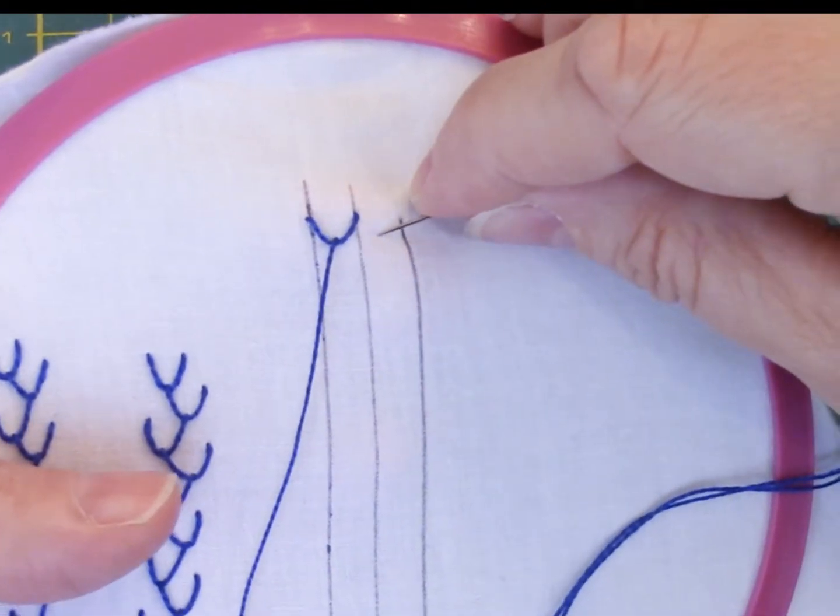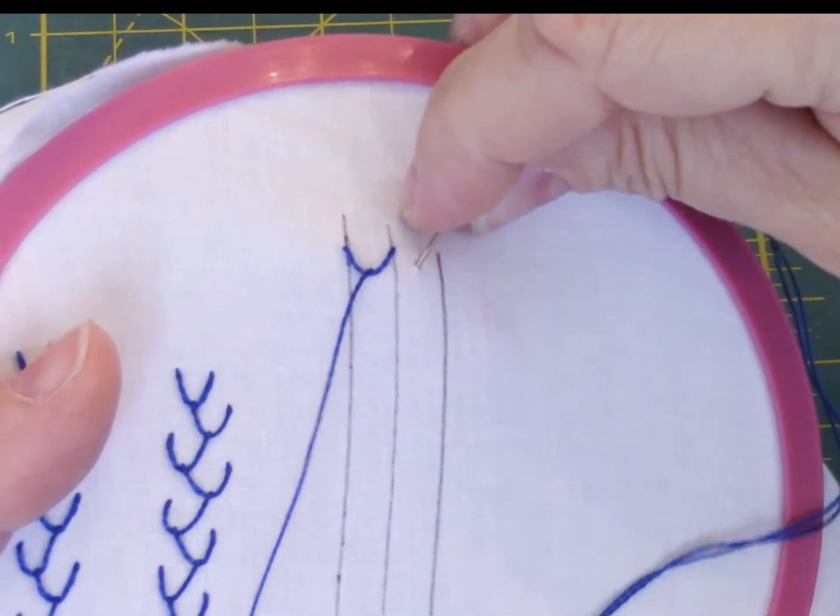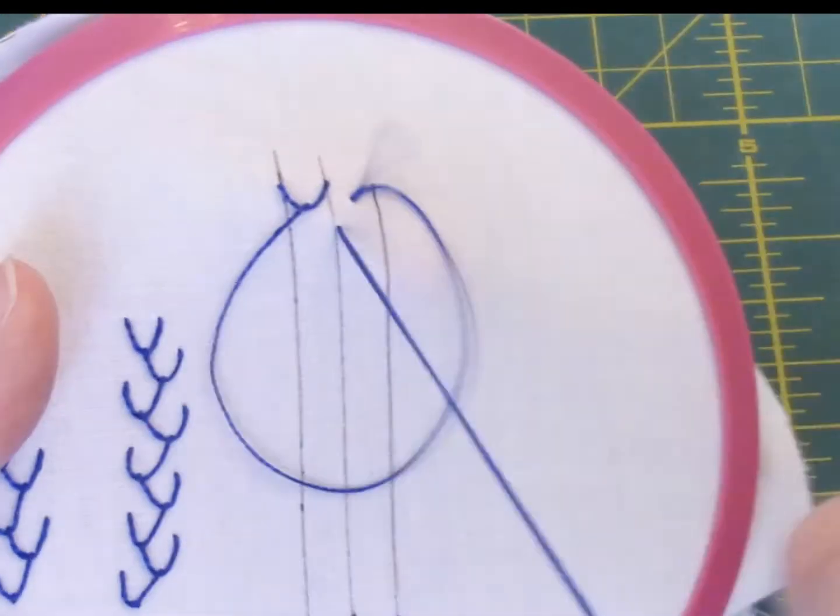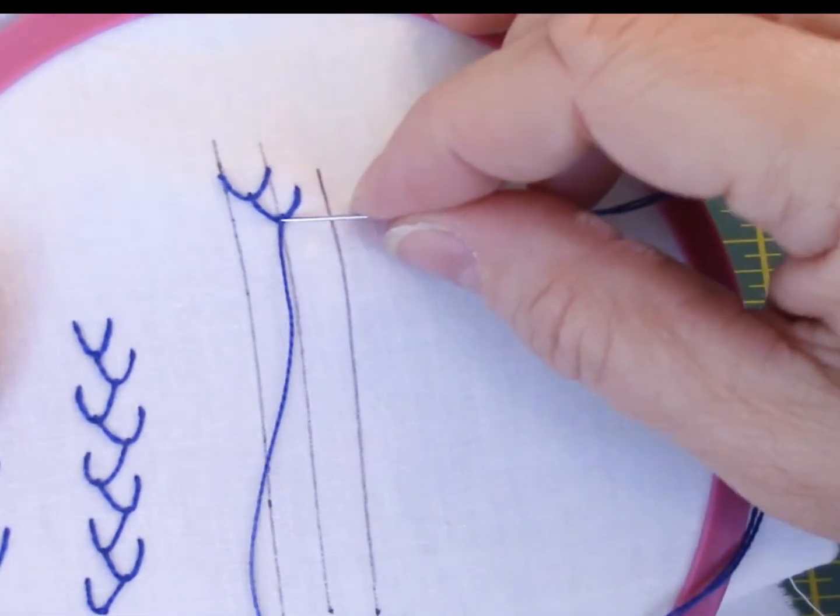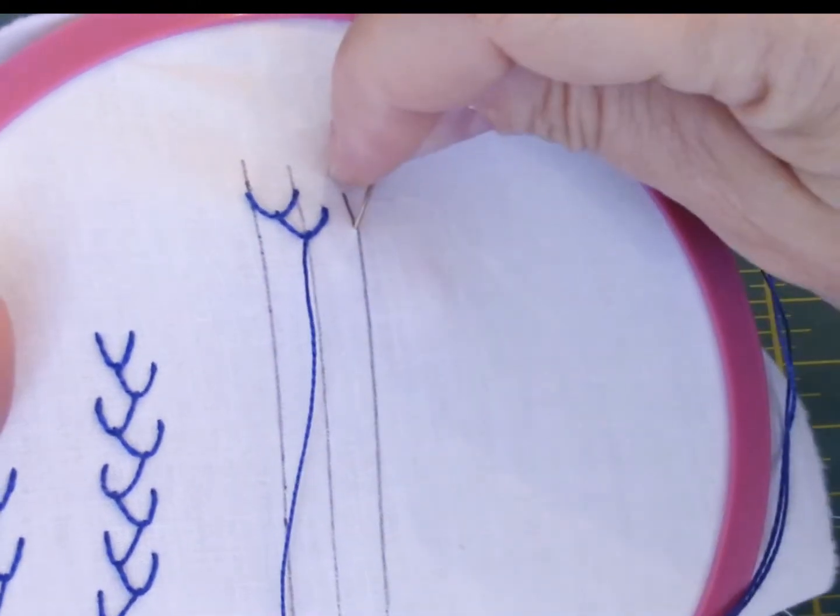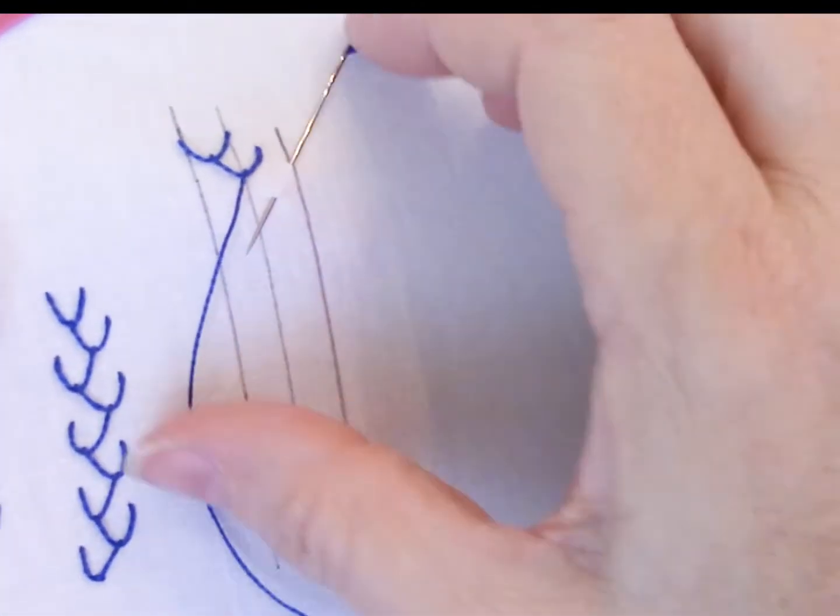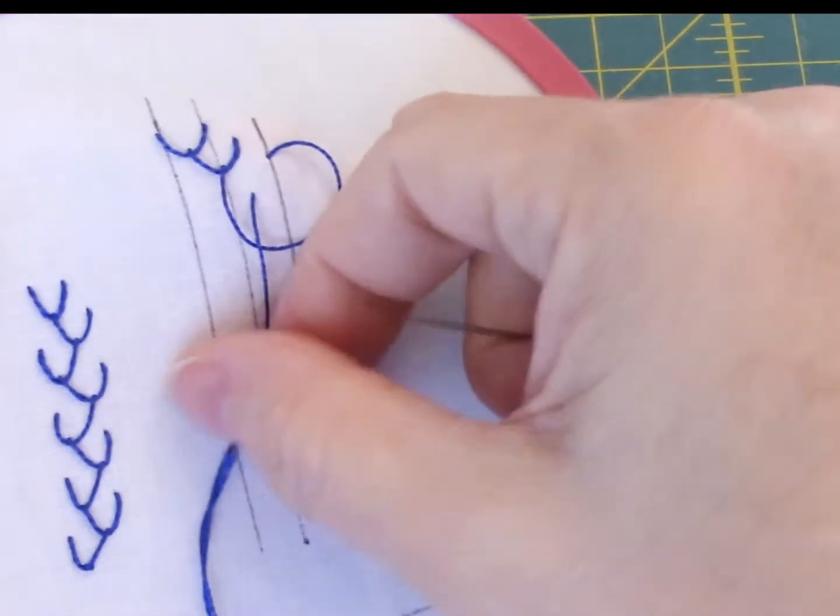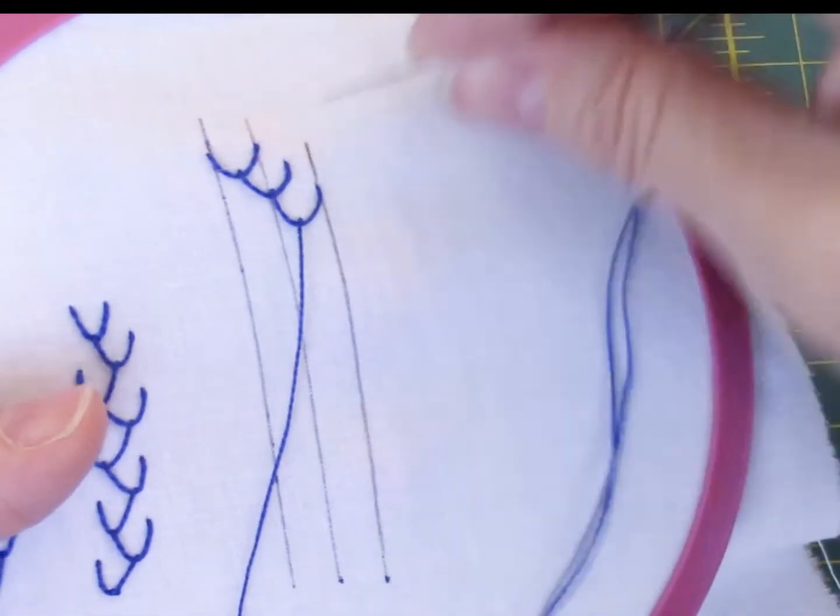Then between the lines over here, I'm going to go down, and it's parallel with that where I came up, going to go down on the line. Then I will come over parallel to where I came up here on this line. Go down, bring my needle up between the lines. And now I'm just working back across the lines the other way. So I'm going to do another one right below this one.